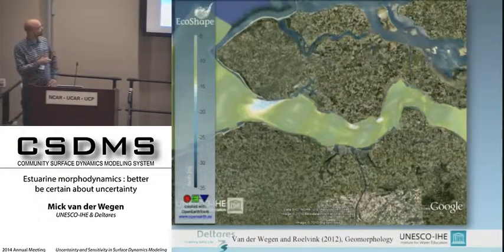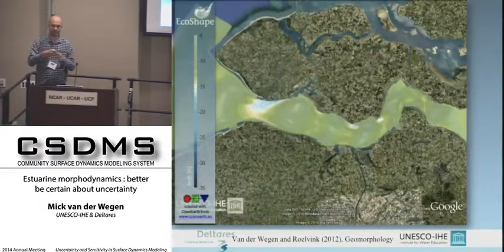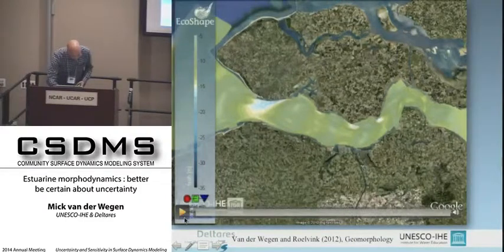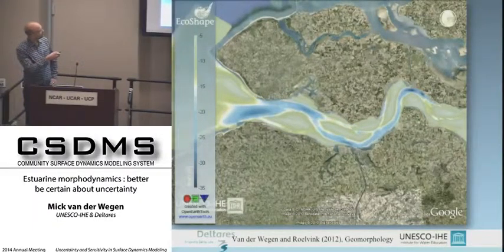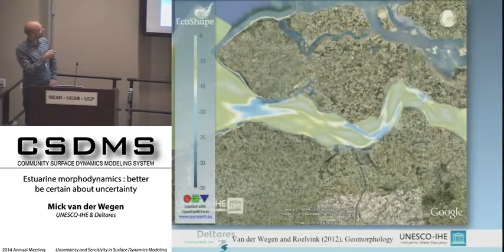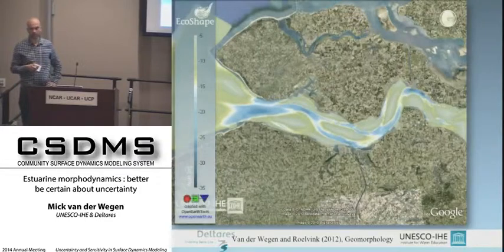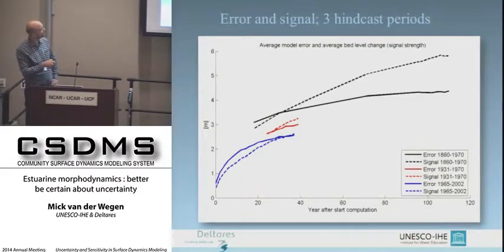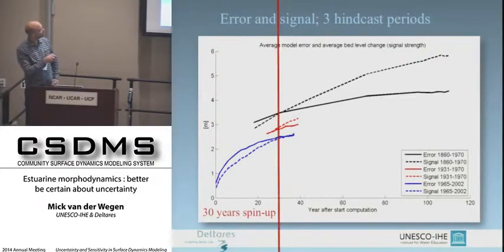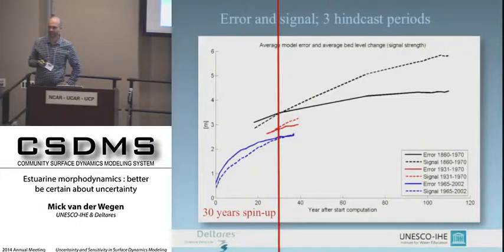What takes over on the longer term is probably the interaction of the main tidal constituents with the planform of the basin. Starting from a flat bed, you see that process. I put in the same amount of sediment as was present in 1998, and the patterns evolving really look like the 1998 bathymetry — so the planform of your basin determines to a large extent how the morphological development will take place. After 30 years, the signal becomes larger than the error, meaning you need about 30 years of morphodynamic spin-up before you can trust your model results.